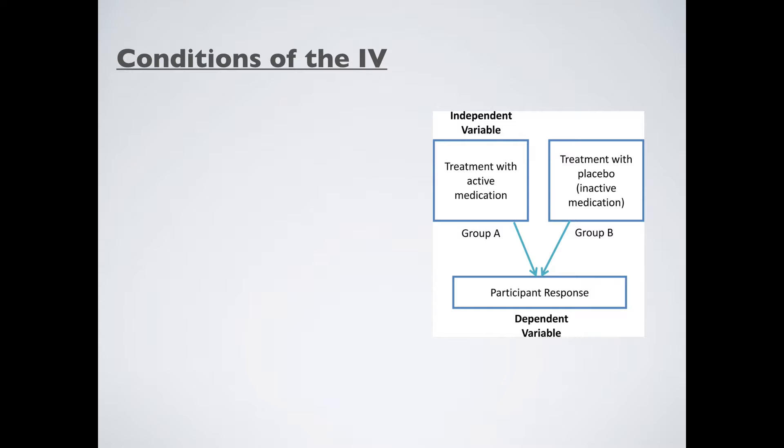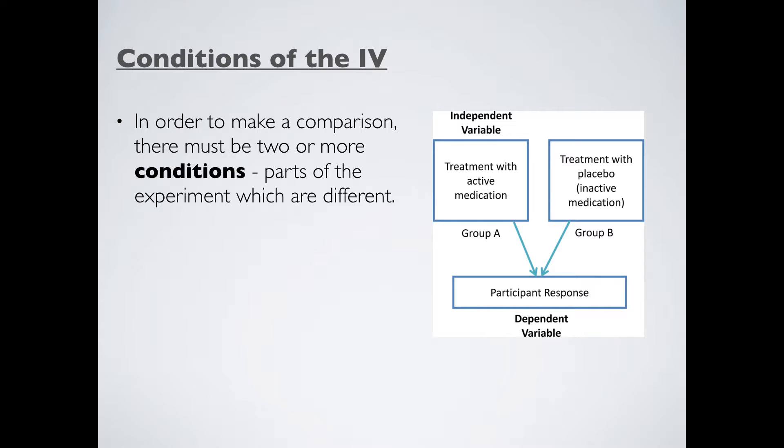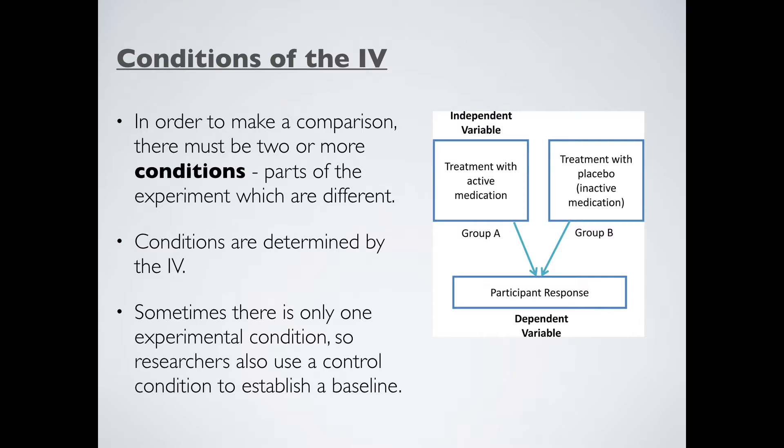Every experiment involves a comparison. It's not just a case of comparing one thing to another. There's lots of different things to take into account here. In order to make a comparison, there has to be two or more conditions. A condition is a part of the experiment that is different. So for example, if we want to study the effect of background noise on revision, you would have a low noise condition and a high noise condition, and what we do here is we compare the effect on people's exam scores. The conditions will be pretty much determined by the IV in this case. Now, sometimes there's only going to be one experimental condition. This is where we have something that is present or it could be something that is going to be there in the room. So in this case, what we also must have is a control condition as well. And a control condition establishes a baseline measuring how things are under relatively normal circumstances.